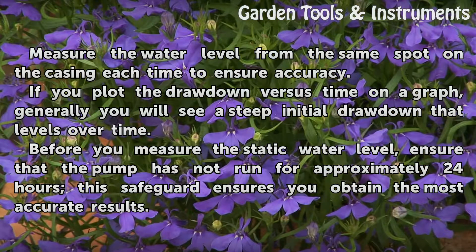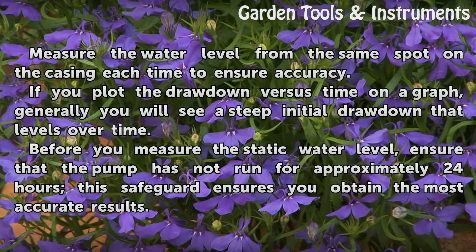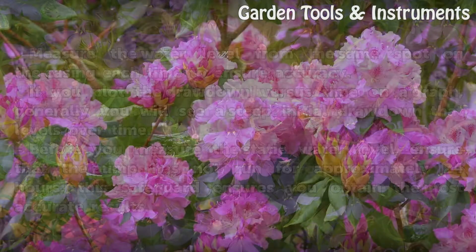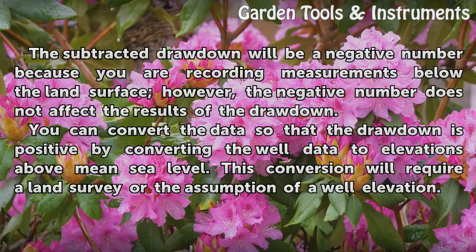If you plot the drawdown versus time on a graph, generally you will see a steep initial drawdown that levels off over time. Before you measure the static water level, ensure that the pump has not run for approximately 24 hours — this safeguard ensures you obtain the most accurate results. The subtracted drawdown will be a negative number because you are recording measurements below the land surface; however, the negative number does not affect the results of the drawdown.